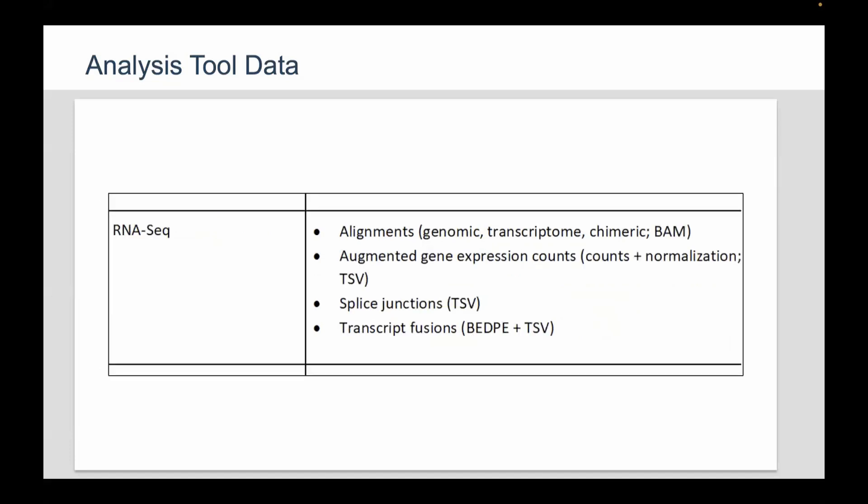Another popular data type is RNA-seq. This includes three types of alignments: genomic alignment (regular RNA-seq reads aligned to the genome), transcriptome alignment (same reads aligned to the transcript), and chimeric BAM (read pairs that map to different chromosomes). There are also open access augmented gene expression counts — the alignments are controlled access, but the gene expression counts are open access. This includes raw read counts and several normalization methods in TSV format. There are also splice junctions (controlled access) and transcript fusions.